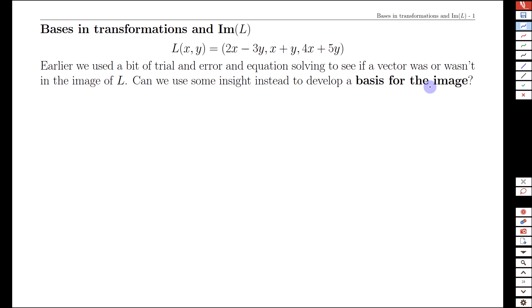We'll look for a basis for the output vectors we can build using this transform. In this example, we have our transform L that maps elements of R² to elements of R³—one, two, and three output elements. We're mapping the plane to three-dimensional space. If we're looking for the basis of the image, we're looking for output values, so let's consider what we get when we transform an arbitrary (x, y) value.